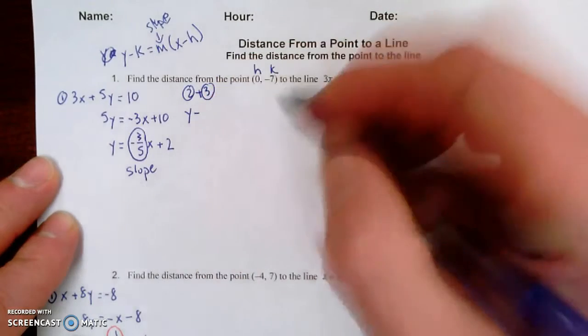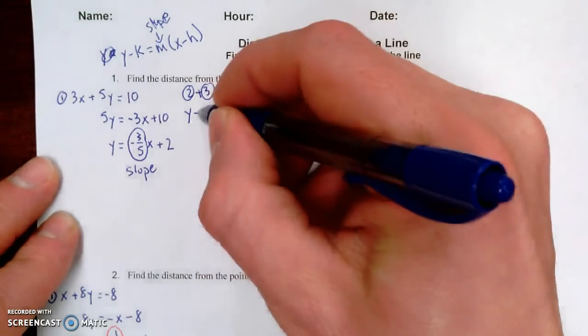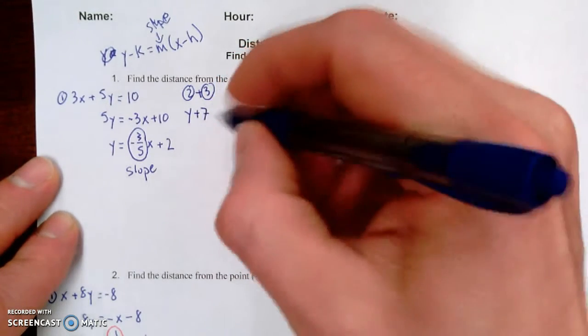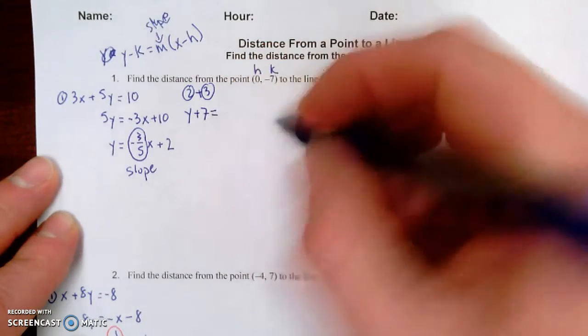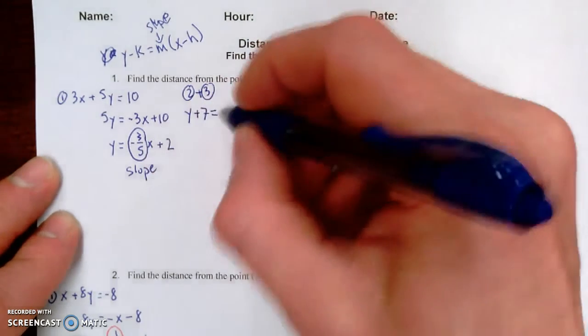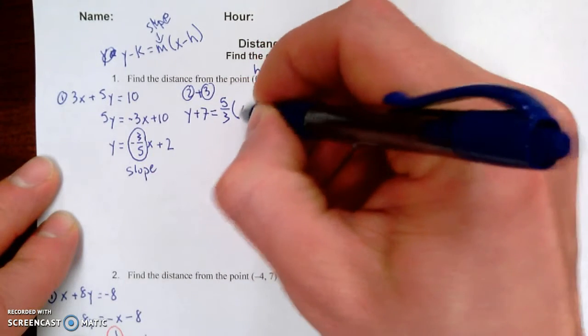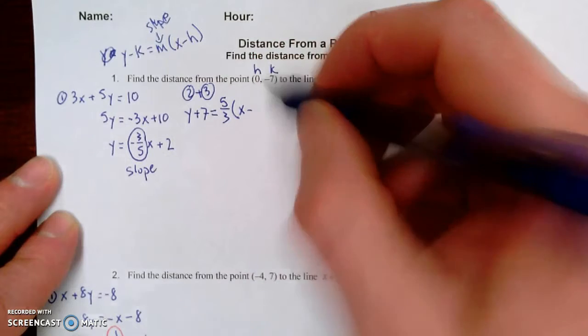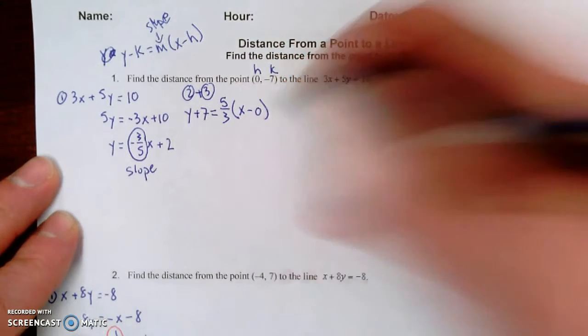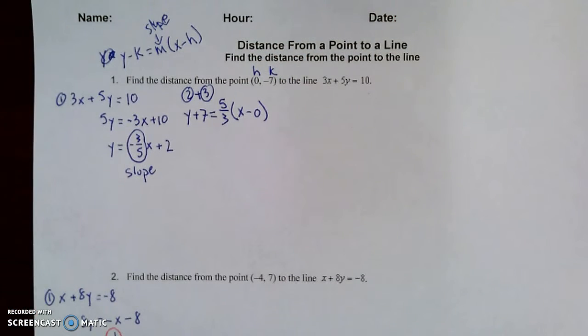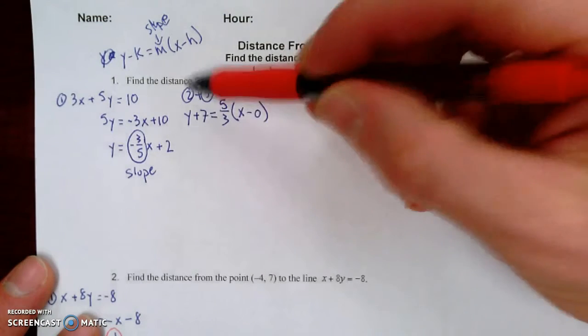So y minus a negative seven, which turns out to be plus seven, equals m, our slope. So we take our slope down here, we flip it upside down and change the sign, so it becomes five-thirds x minus our h, which is zero. All right, so we've written the equation in point-slope form. That's step two.